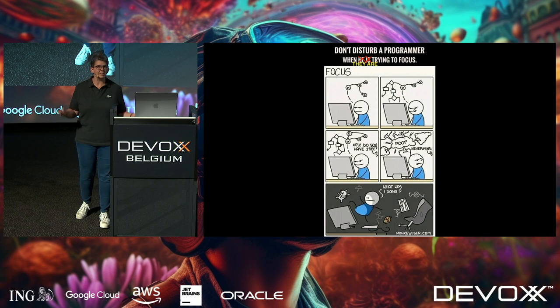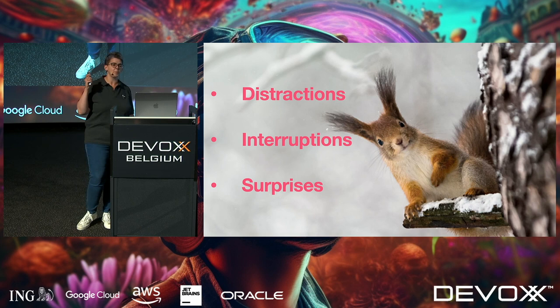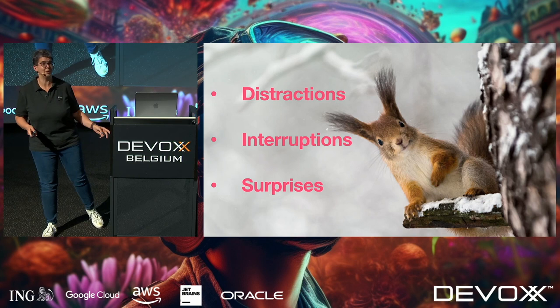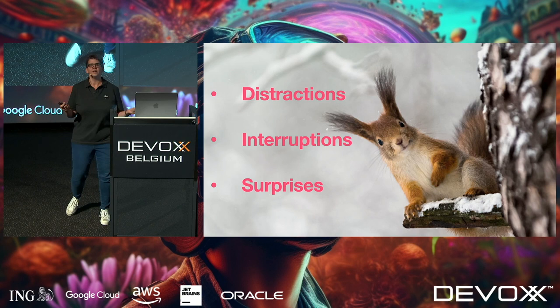So this is going to be the structure of the talk. I promised squirrels — I delivered — that deserves a high rating. I'm going to talk about developer distractions; there are lots of different kinds. Developer interruptions — you all know what these look like: they look like 'have you got a minute?' And we're going to talk about surprises, because I get a lot of surprises in my work and I'm still like, 'that's really surprising, why didn't I see that coming?'